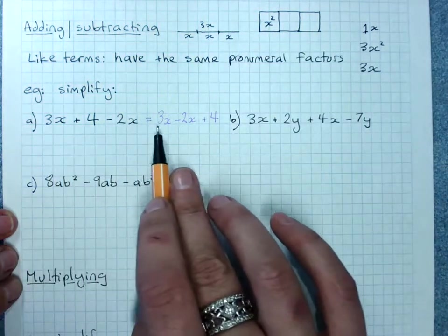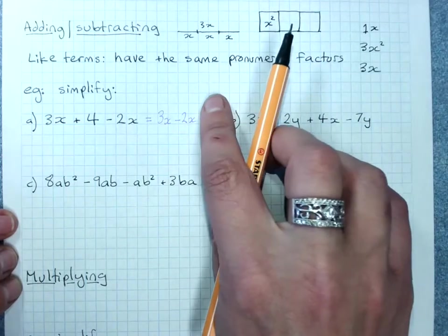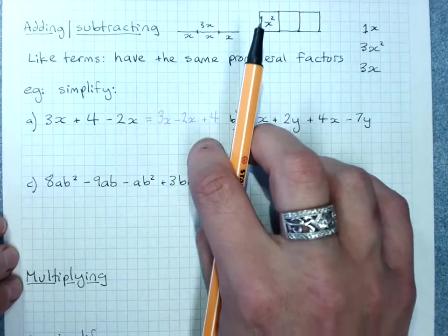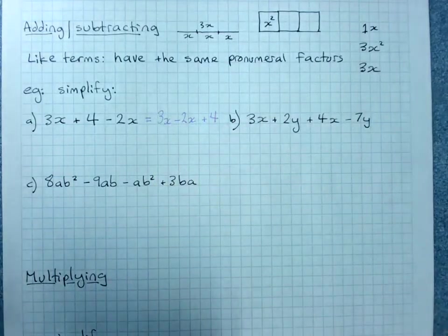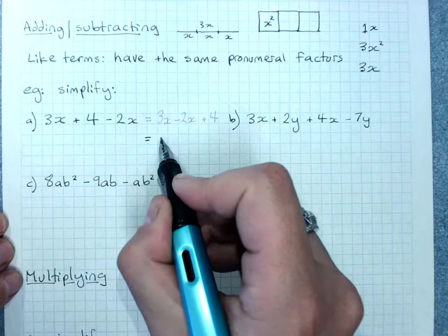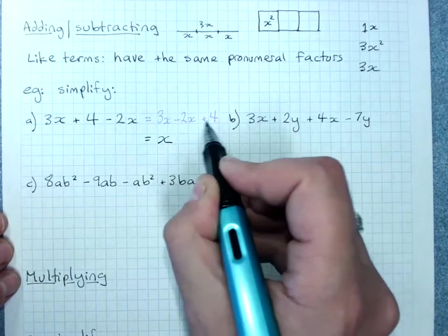3x minus 2x plus 4. You must keep the whole value of the expression here. Do not just do 3x minus 2x, oh that equals x and now I'll put my plus 4 in. If you say equals it means these are equivalent and equal. 3x minus 2x is 1x which we write as x plus 4.